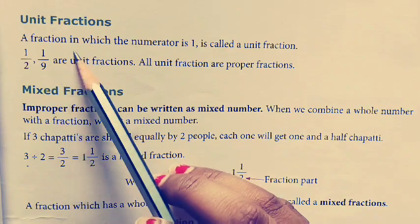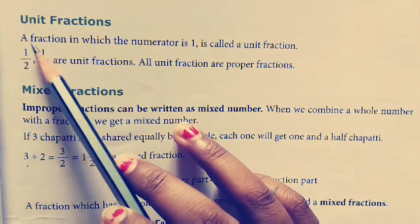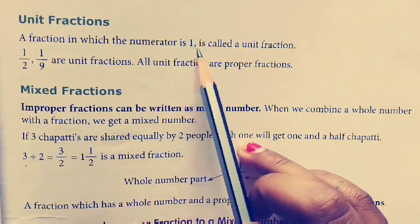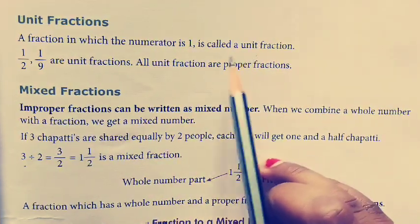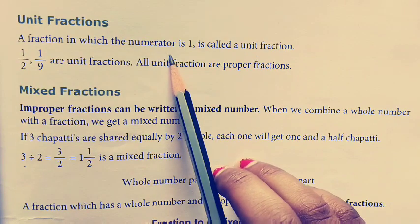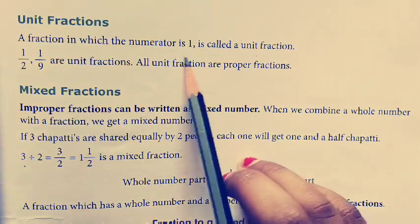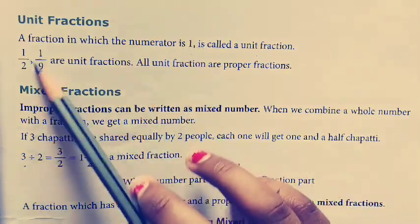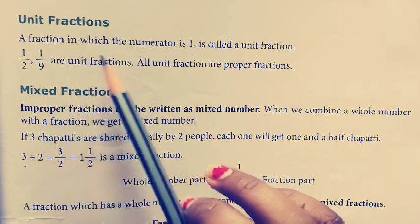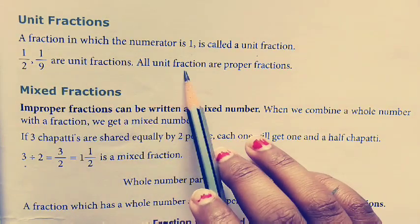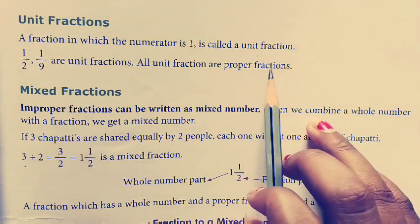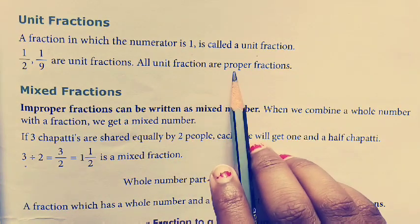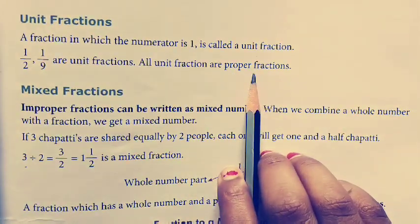Unit fraction means a fraction in which the numerator is 1 is called a unit fraction. Jis fraction mein numerator 1 hoga, use hum unit fraction kahenge. For example, 1 upon 2 and 1 upon 9 are unit fractions. All unit fractions are proper fractions — jo bhi unit fraction hai, use hum proper fraction bhi bolenge.